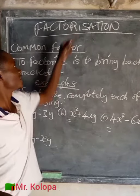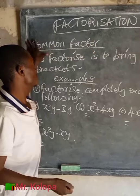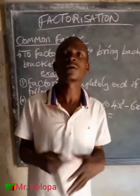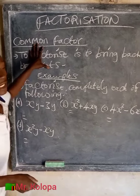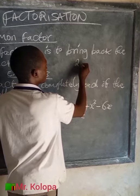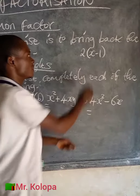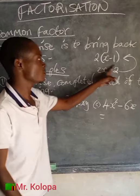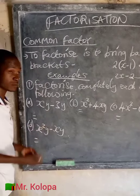Let's look at the lesson for today. We are talking about factorization, and the first sub-topic is the common factor. We should know how to find the common factor. To factorize is to bring back the brackets. For example, we have 2(x minus 1) — that is an expansion. We multiply that and get 2x minus 2. Going back to bring back the brackets is factorization. Simply to factorize is to bring back the brackets.